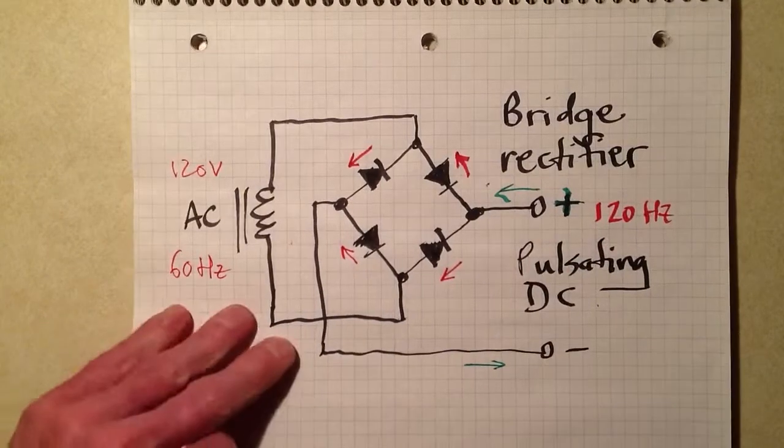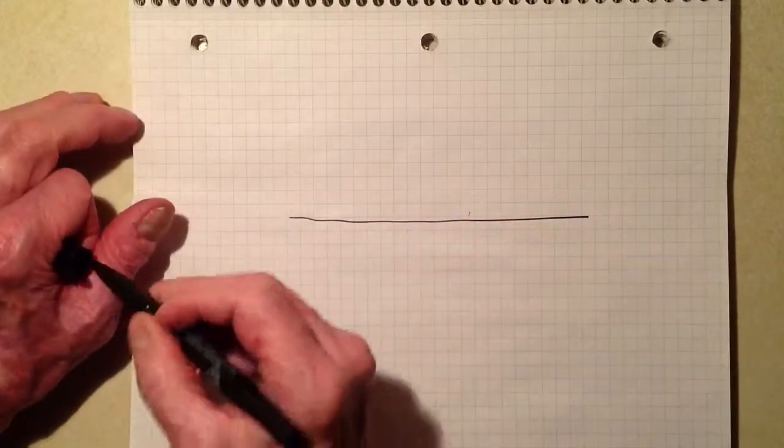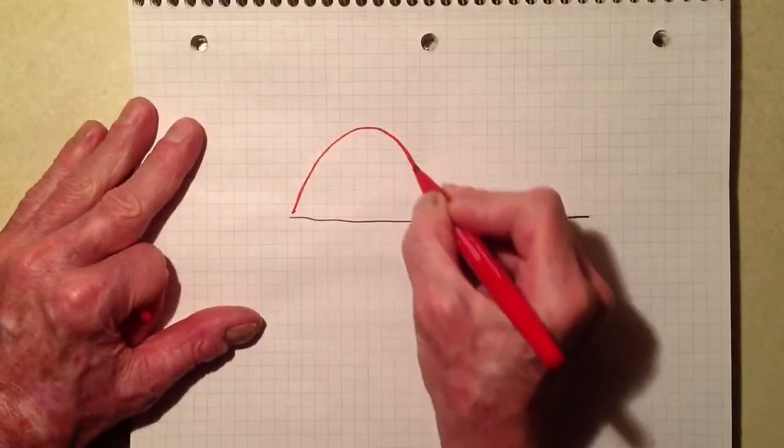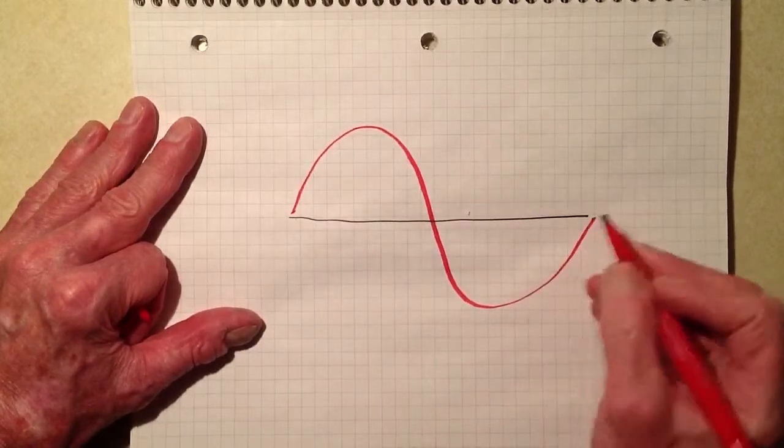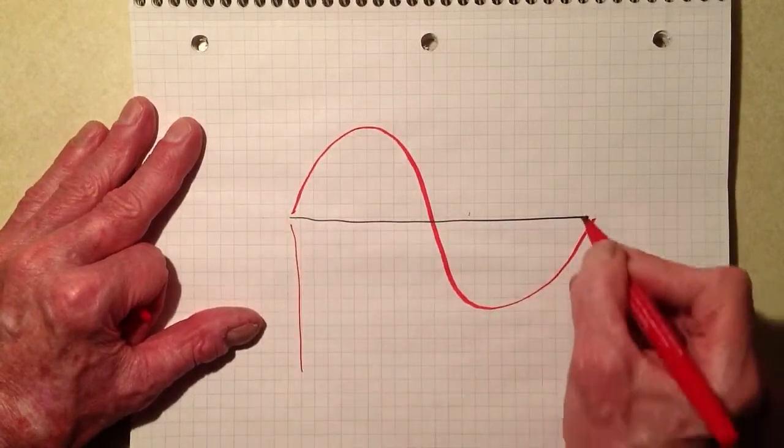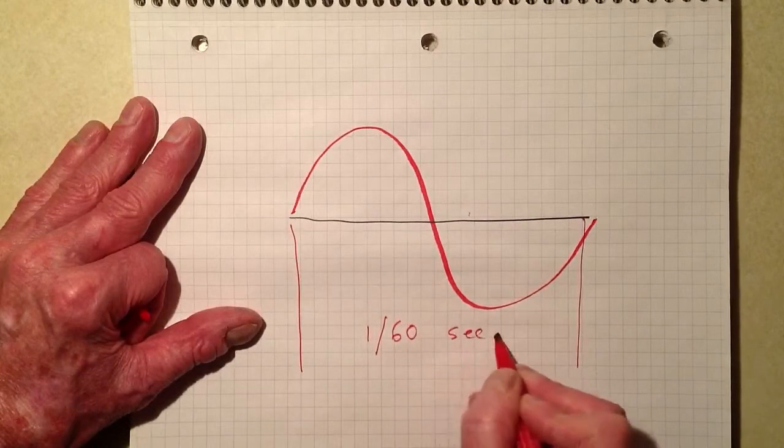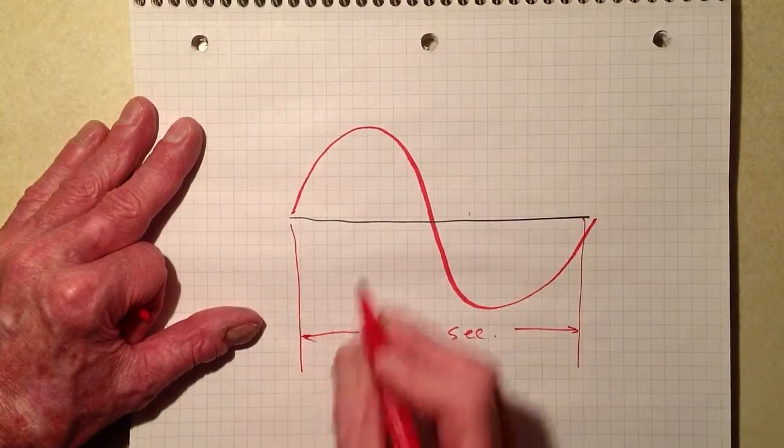If you look at an AC wave cycle, let's just draw an AC wave right here. Your simple sine wave. This is one-sixtieth of a second right here. That's one complete cycle.